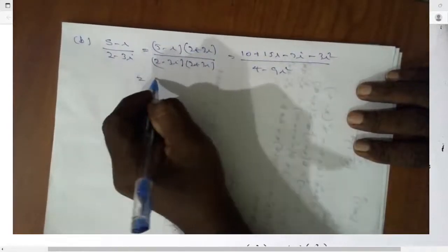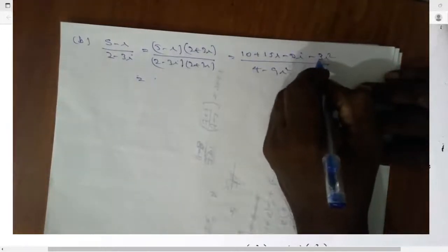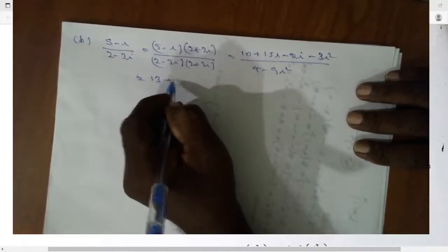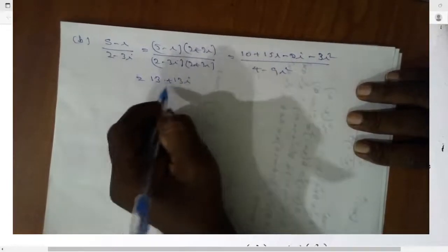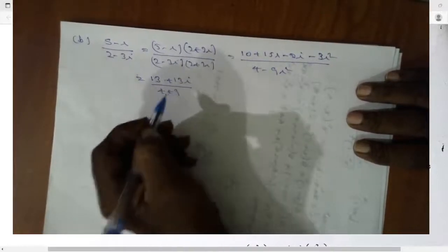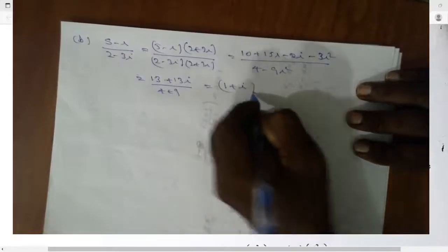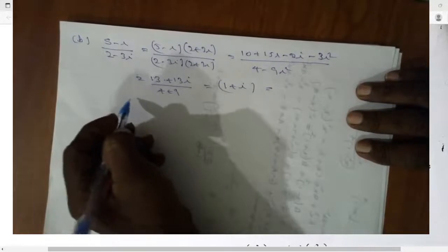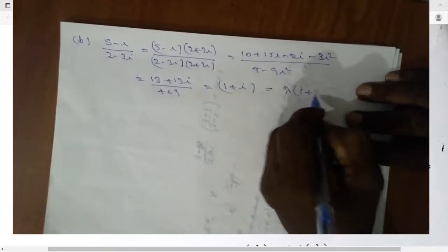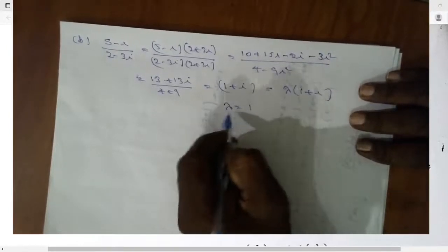So this equals 13 plus 13i over 4 plus 9, equals 1 plus i. So you have to express this as lambda times 1 plus i. What is lambda? Lambda equals 1.